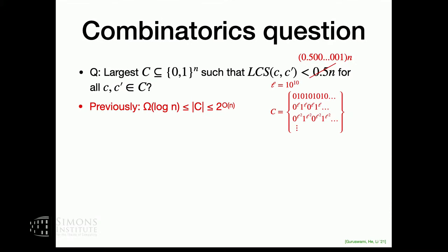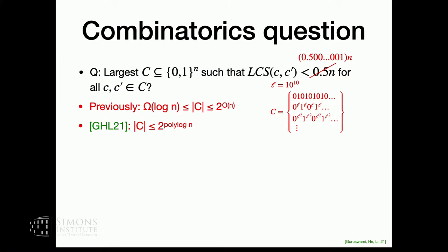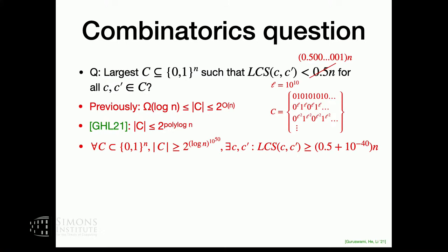Before our work, there was a double exponential gap between the best upper and lower bounds. The best construction had roughly log n strings, and the best upper bound was not much better than the trivial two-to-the-n exponential type. You can improve the constant and the exponent, but it's a double exponential gap. The main contribution of our work was to improve the upper bound from exponential type to quasi-polynomial type. To be precise: in any set of binary strings that's sufficiently large quasi-polynomial size, there are two strings with LCS n over two plus epsilon n, for some absolute constant epsilon.